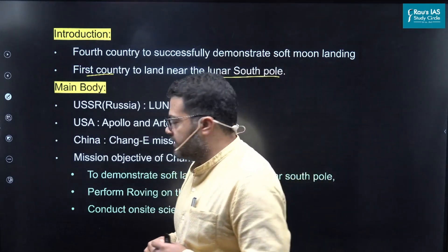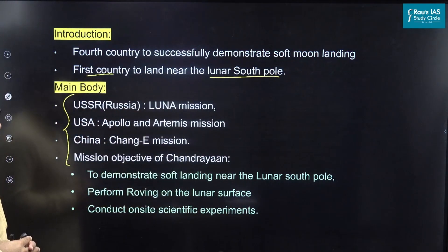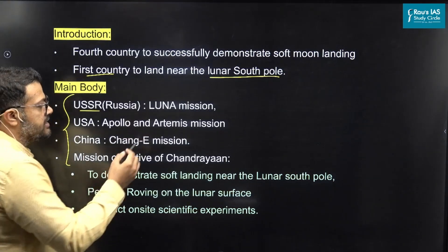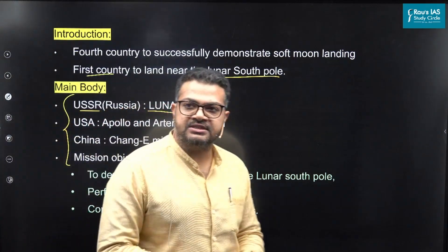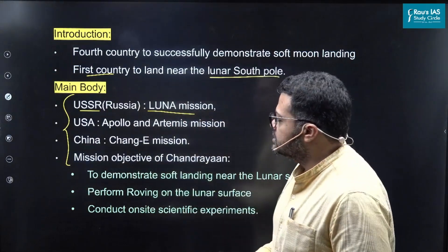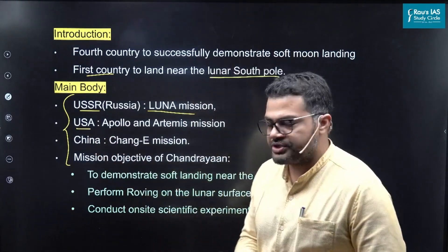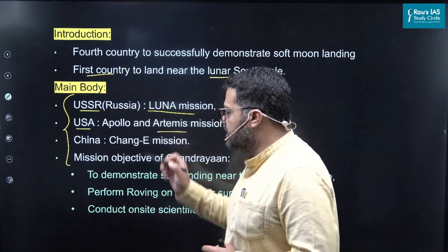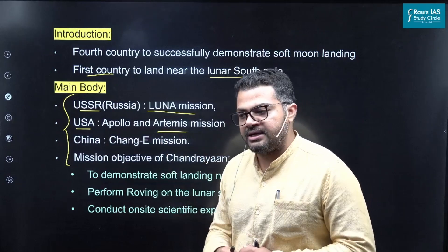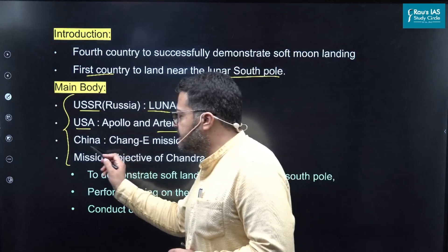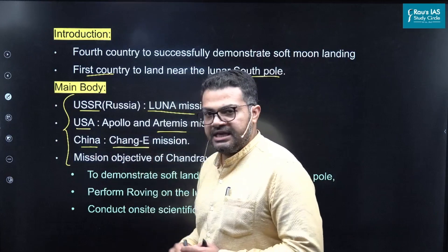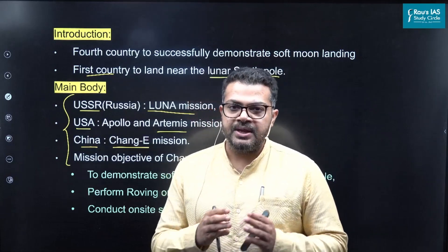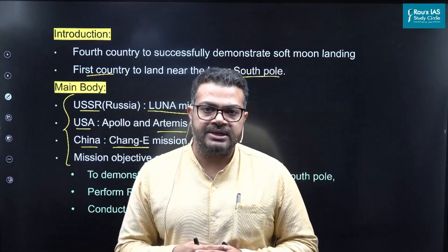Now let's address the countries UPSC asked about. The former Soviet Union (USSR) had a mission called Luna mission that successfully touched the moon surface — Luna 9 was the one which successfully achieved this. Then USA was the second country to successfully demonstrate landing on the moon under their Apollo mission. In current times, USA has also undertaken the Artemis program related to moon landing, though it is yet to demonstrate the actual landing. China is the third country which successfully achieved this objective under their Chang'e mission. Israel and Japan are two other countries that have tried but unfortunately have not been successful so far.